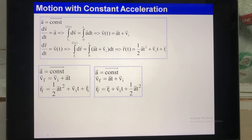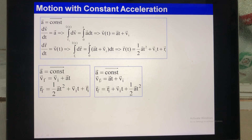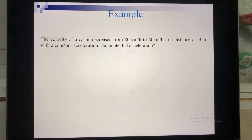Writing in component form using an xyz coordinate system: Vf has components Vxf, Vyf, Vzf, and Vi has corresponding initial components. Since we consider the car moving along one axis — say x — you don't need vectors. You write the scalar expression for V and x only.